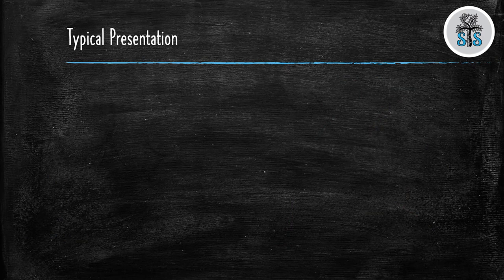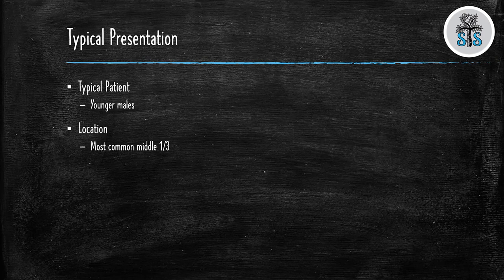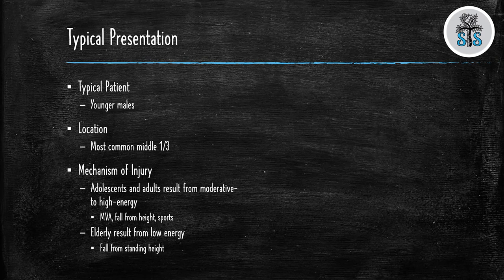What's a typical presentation? The typical patient presenting with a clavicle fracture is going to be a male, somewhere between the ages of 10 and 30 years old, although it's not uncommon for them to be older or younger. The fracture most commonly will be in the middle third, but it is not uncommon to see fractures in the lateral third as well. The mechanism of injury is usually dictated by age. In adolescents and adults, the mechanism is going to be moderate to high energy, such as a motor vehicle accident, fall from height, or a sports injury. Whereas if it is an elderly patient, they may have had a fall from standing height onto their shoulder.